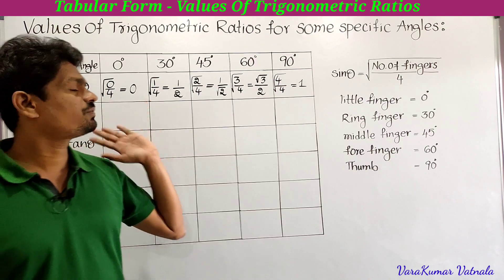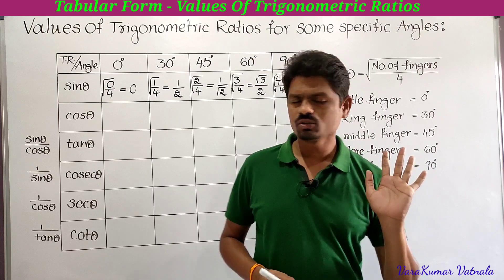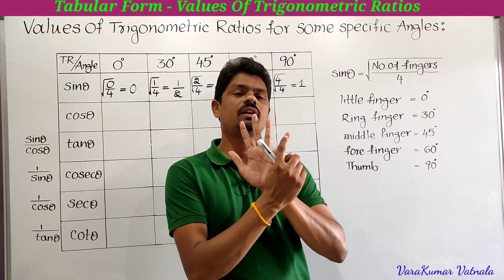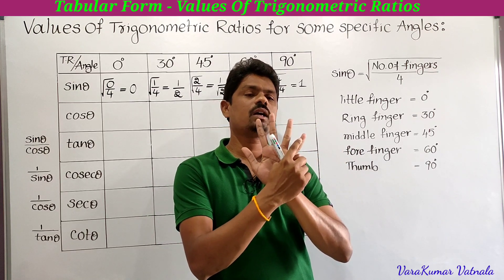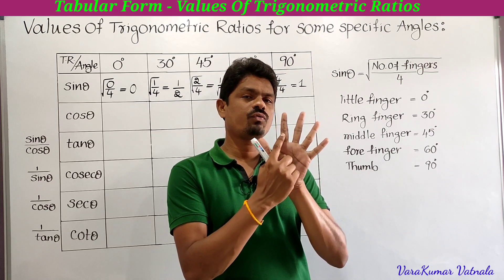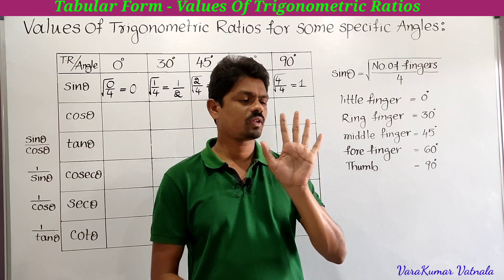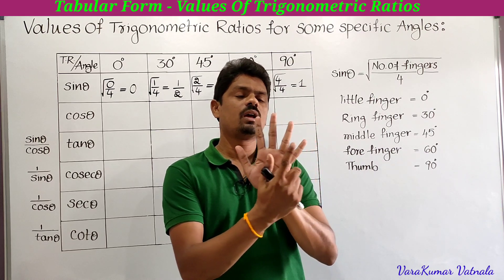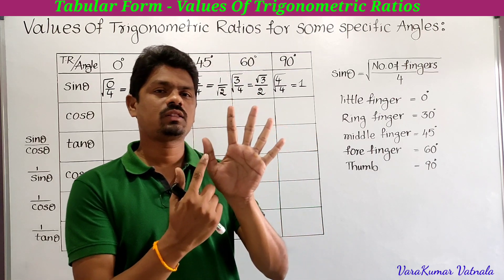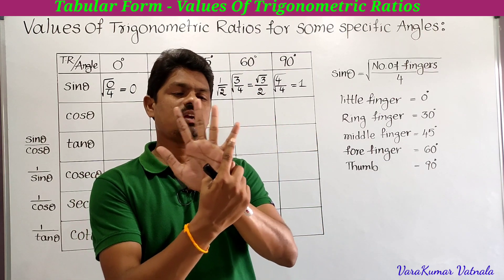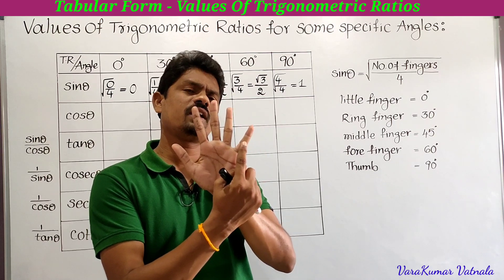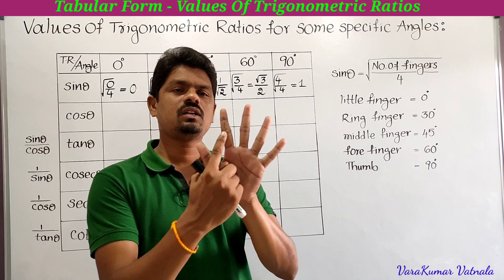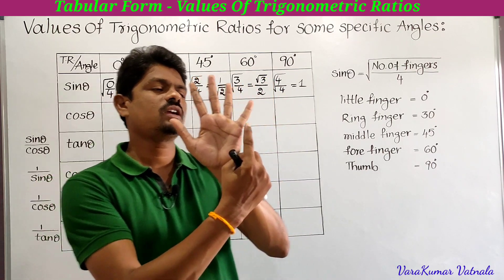This can also be applied using the palm trick. Using the palm trick we can also remember the values. See here — the fingers from left to right are: little finger, ring finger, middle finger, forefinger, and thumb. These correspond to 0°, 30°, 45°, 60°, and 90° respectively.